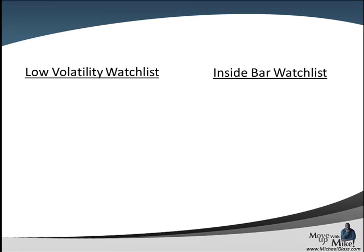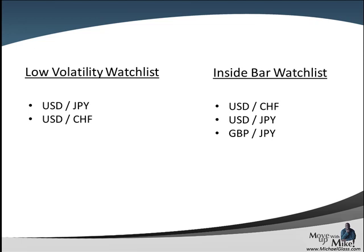Moving on to our low volatility watch list — given the indecision we're talking about, we do have some candidates: the dollar yen and the dollar franc. The inside bar watch list candidates are the dollar franc, dollar yen, and pound yen. For the low volatility watch list, take the one-hour Bollinger Bands, mark the high and low, and watch for a break. For the inside bar watch list, take the high and low of Friday's action and watch for a break.